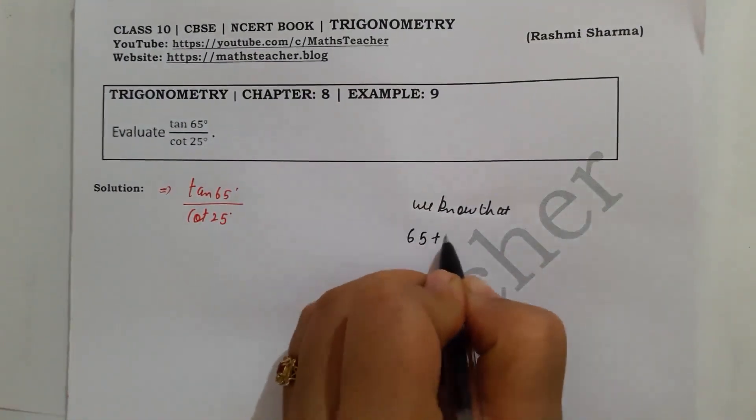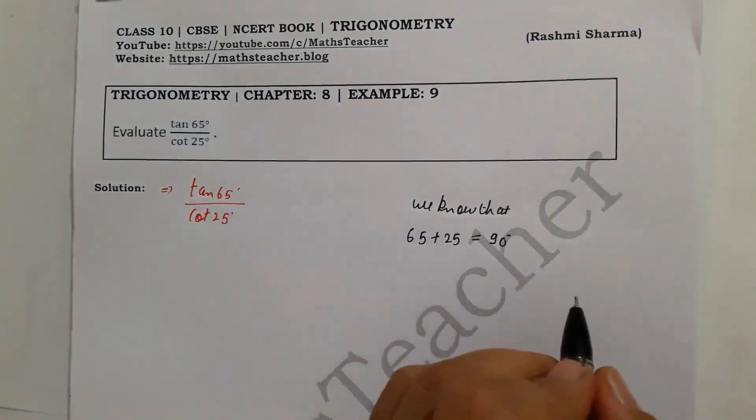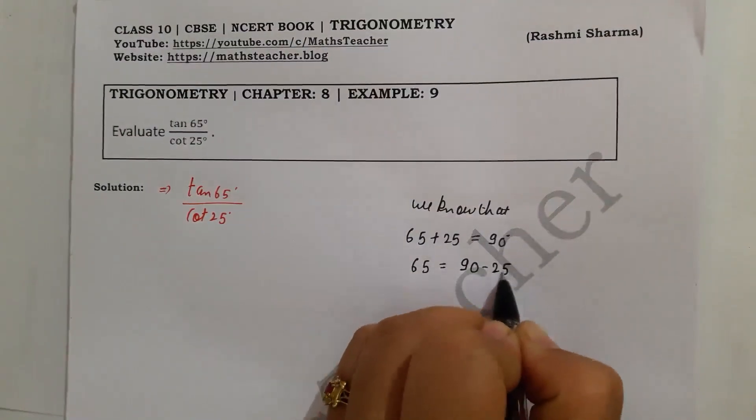We know that 65 plus 25 is 90 degrees. So we have to write 65 as a complementary angle. So 65 equals 90 minus 25 degrees.